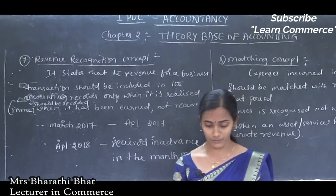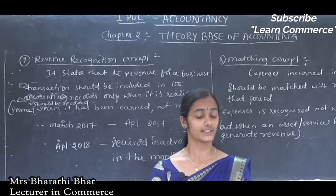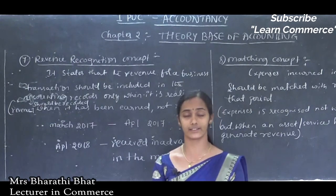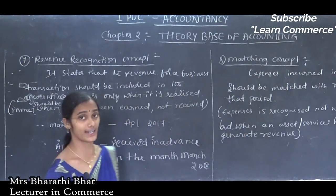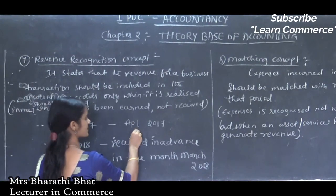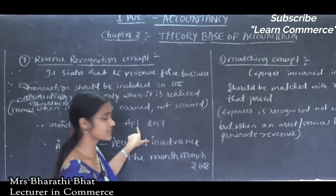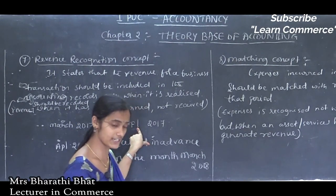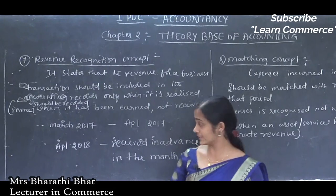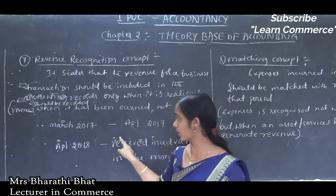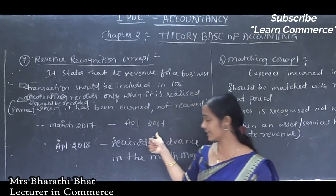For income such as rent, interest, or commission, these are realized on a time basis — over a fixed period of time. For example, rent or interest for March 2017 may be received in the month of April 2017. But you should consider this amount — it will be taken into record in the profit and loss account for the year it relates to, which is March 2017.